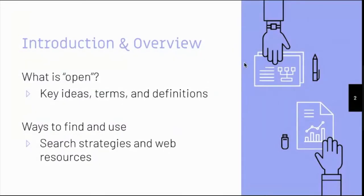In this session, we're going to be talking about two key themes. The first is around what open means — those key ideas, terms, and definitions that surround open education and the resources related to it. Secondly, Carrie is going to give us a tour of ways to find and also use open educational resources such as open textbooks. She will outline some search strategies and web resources that you can use to support your own teaching online.